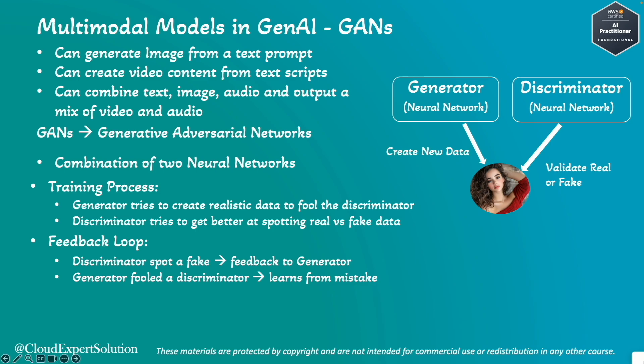Next is the Feedback Loop, which has two steps. First, Generator Improvement: when the Discriminator correctly identifies fake data, it provides feedback to the Generator on how to improve. Second, Discriminator Improvement: when the Discriminator is fooled by the Generator, it learns from that mistake and gets better at spotting fakes. This training and feedback is an iterative process that takes place across multiple levels of iterations.